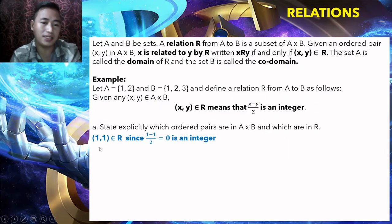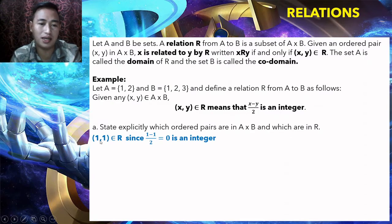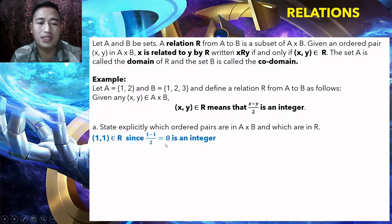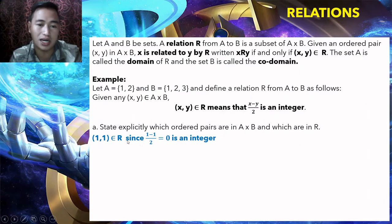Start with (1,1): substitute x = 1, y = 1 into (x − y)/2. So (1 − 1)/2 = 0/2 = 0, which is an integer. So (1,1) is an element of R.